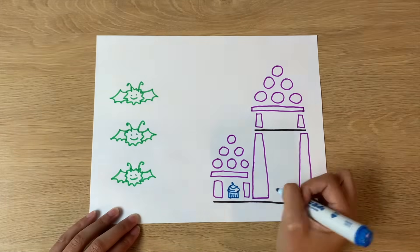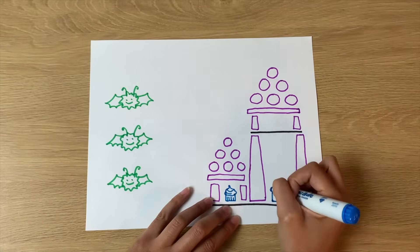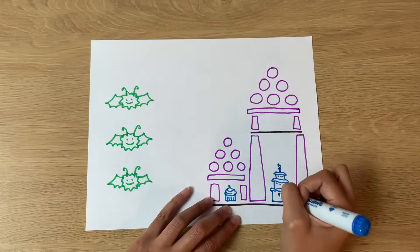Use blue to draw things the avatar needs to collect. Goals are affected by gravity and will fall when the game starts.